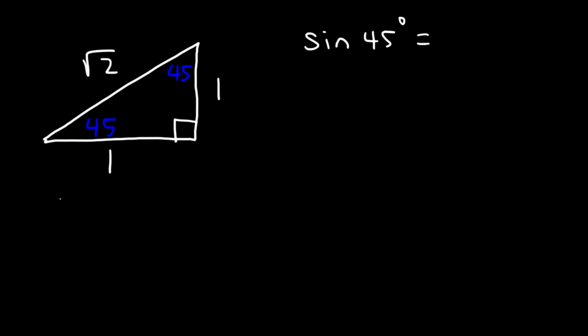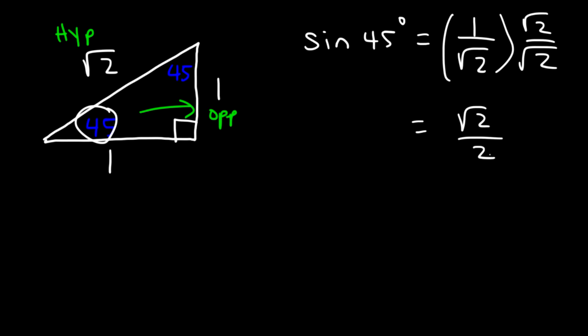Sine 45: we can pick any angle. Opposite to that angle is 1 and the hypotenuse is the square root of 2. So sine 45 is 1 divided by the square root of 2, and if you rationalize it you're going to get this familiar answer: square root 2 divided by 2, which is on the unit circle.